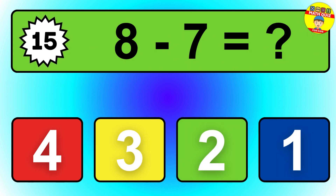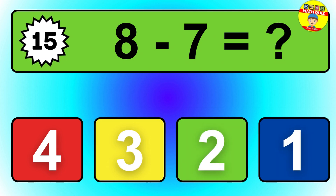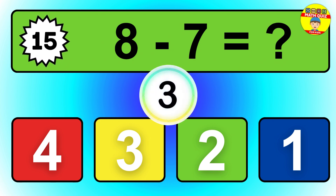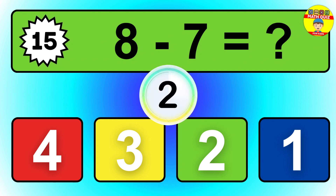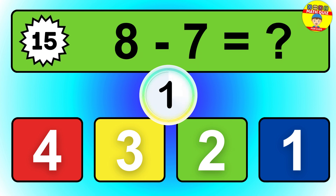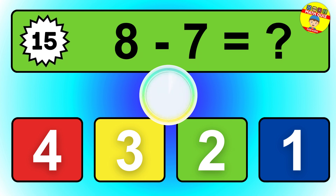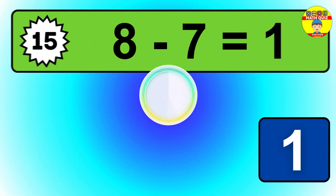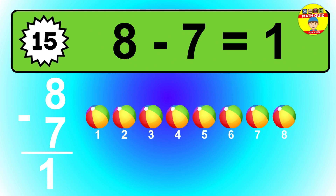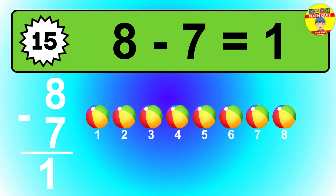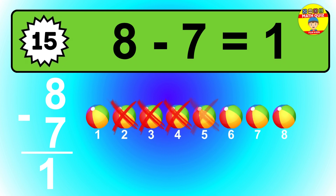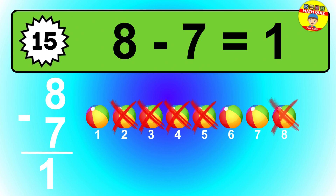Question 15. 8 minus 7 equals what? So the answer is 8 minus 7 is 1. Let's count it: 1.